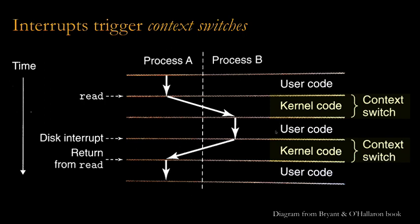Process B runs for a while, and at some point it's interrupted — not because it called a system call, but because the disk is done with its read, triggering a hardware interrupt. The kernel responds to this similarly to a software interrupt, running a specific function designed to handle disk interrupts. In handling that, it realizes process A was waiting for that data, so the kernel may do a context switch back to process A so it can continue running after the read call completes.